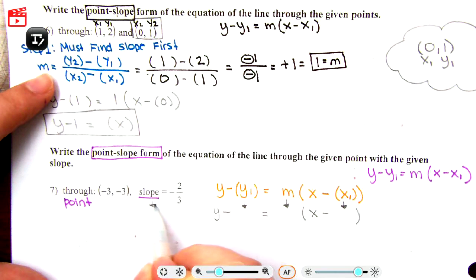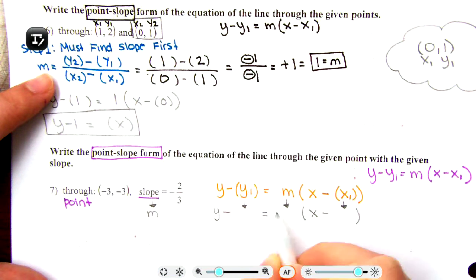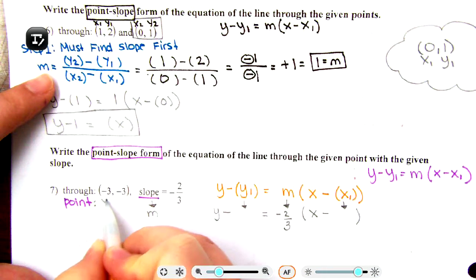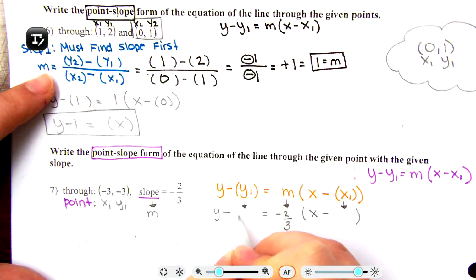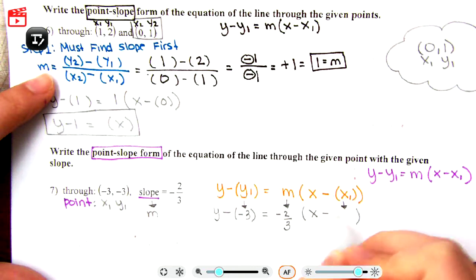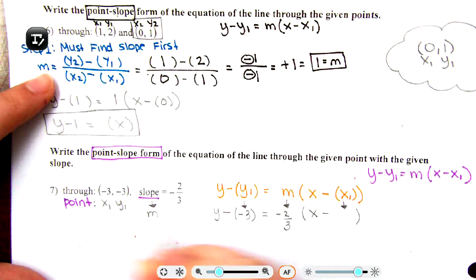We have slope. Slope is little m, so slope is negative two-thirds. The point we did not label, so make sure you're labeling it x1, y1. So y1 is negative 3. This is why parentheses are important. X1 is - for a moment there I thought one didn't have a negative, but turns out both of them have negative - so x1 is also negative 3.